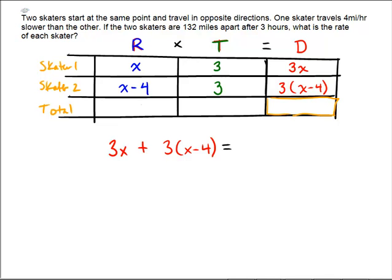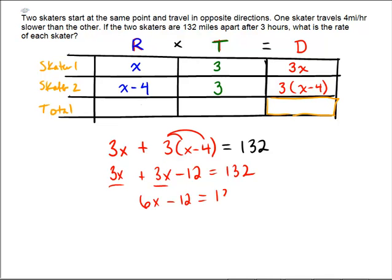But on the other hand, the problem says that the two skaters must have been 132 miles apart after those three hours. So, on the other hand, we also know that the two distances together have to be 132. And now, we're in algebra land. 3x plus, let's see, some distributive property here. 3x minus 12 is equal to 132. Let's collect like terms. 6x minus 12 equals 132.